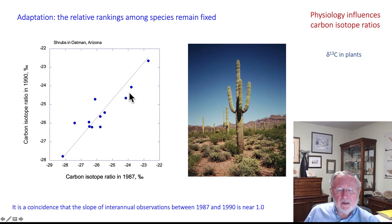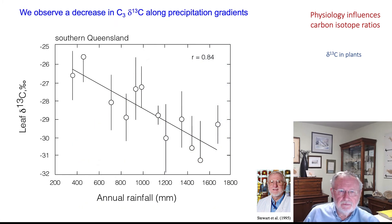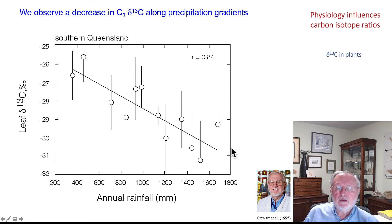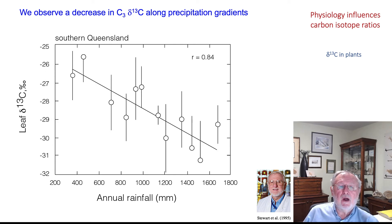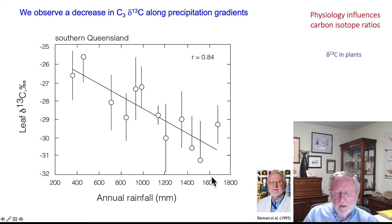The observation that there's a near one-to-one relationship is fortuitous, but the relative rankings are not. We can observe variations in the carbon isotope ratio of C3 plants along environmental gradients. George Stewart had one of the first observations, about two decades ago, showing that if you went to tropical regions with high precipitation amounts you'd find very negative carbon isotope ratio values, whereas if you went to arid lands with low precipitation you had much heavier or higher 13C isotope ratios. This variation reflects a long-term difference in the CI/CA ratios in desert sites relative to tropical sites.